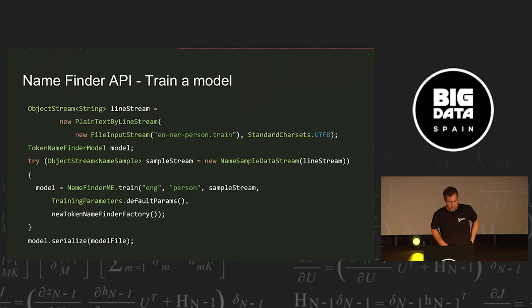So the next step is, how do we train when we want to use the API? First, we create a stream of the input sample objects, that's basically a sentence annotated with the names. So we set this up, and then we go here to the name finder ME train method, we have to tell the language which type we want to train on, we pass in the stream, and a couple of other things, like the parameters for the machine learning, and the way this token name finder factory should be set up. So this will then take a bit, and at the end, it writes out the trained model to a disk or to an output stream, wherever you want to write it.